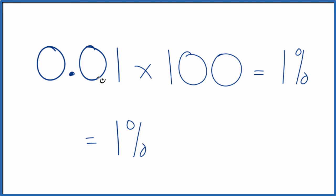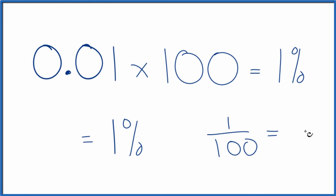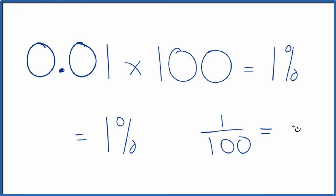Keep in mind that 0.01 is the same as the fraction 1 over 100. So 0.01 equals 1 over 100, and we have a number over 100. That means we have 1%, just like we found before.